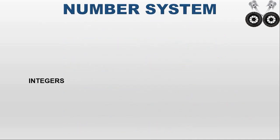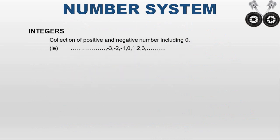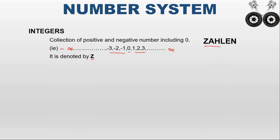That set of numbers is called integers. An integer is a collection of positive and negative numbers which includes zero. The negative integers are minus 1, minus 2, minus 3, and the positive integers are 1, 2, 3, along with 0. There is no end — going right it is positive infinity, and going left it is negative infinity. Integers are denoted by Z, which comes from the German word 'Zahlen,' meaning numbers.